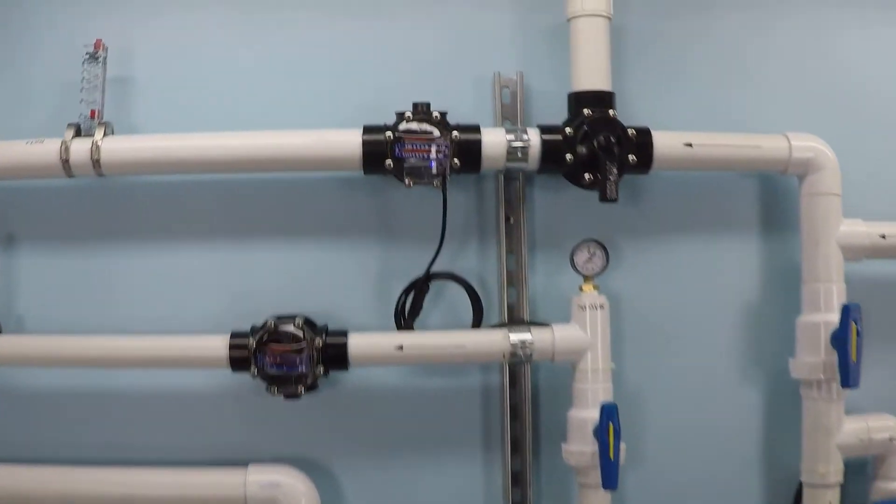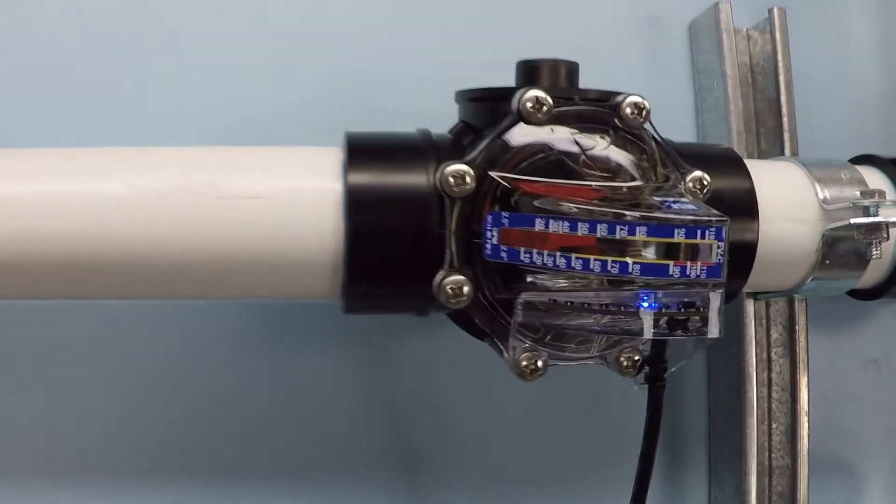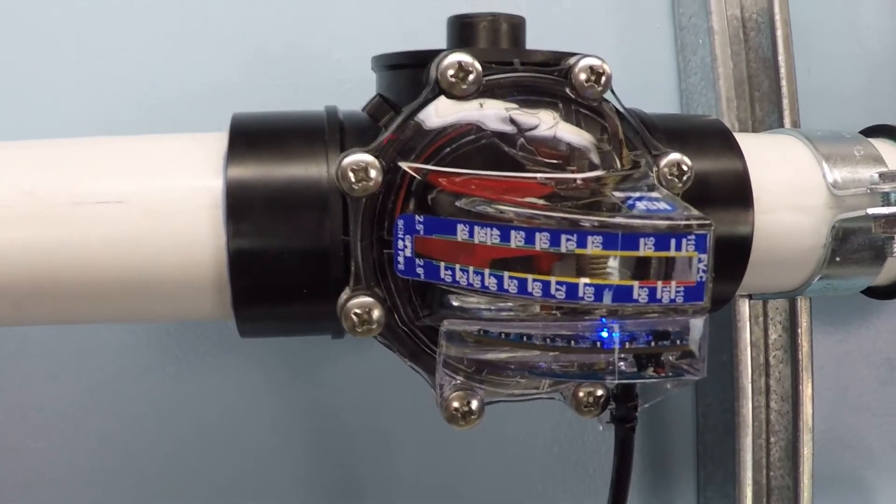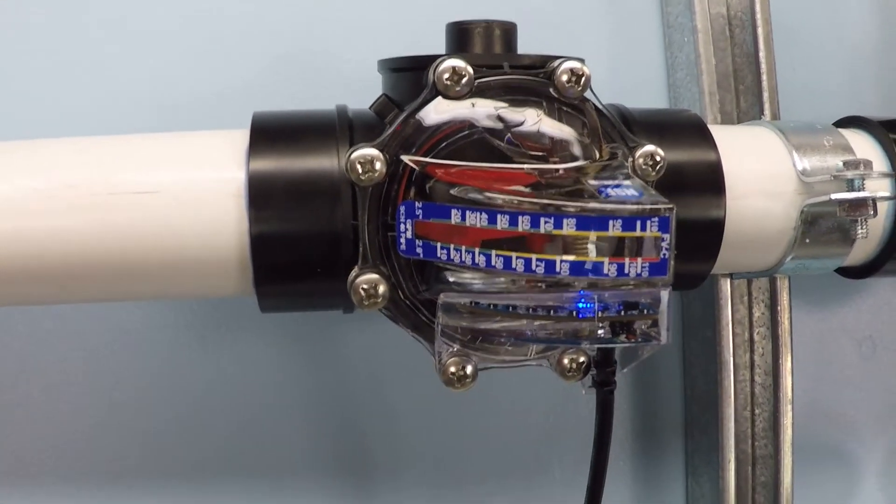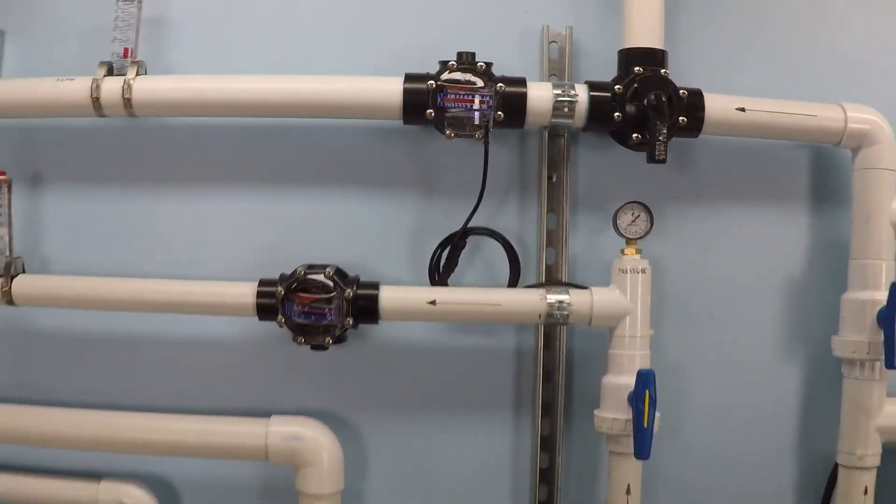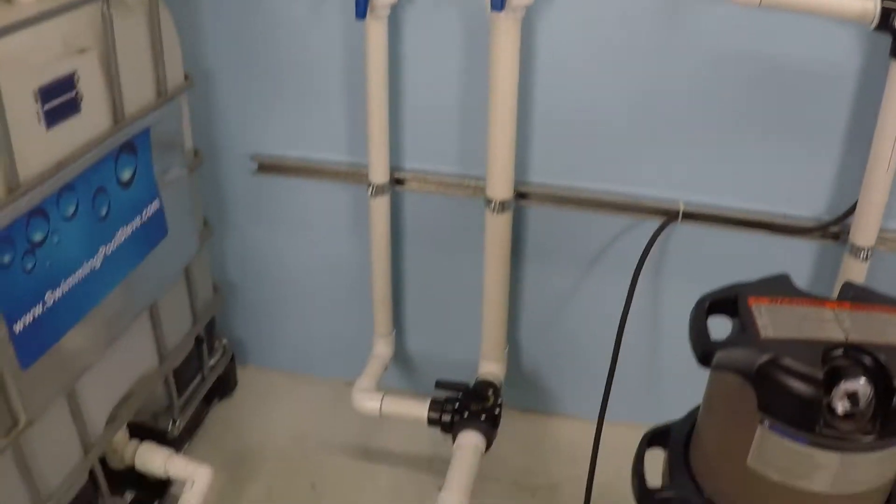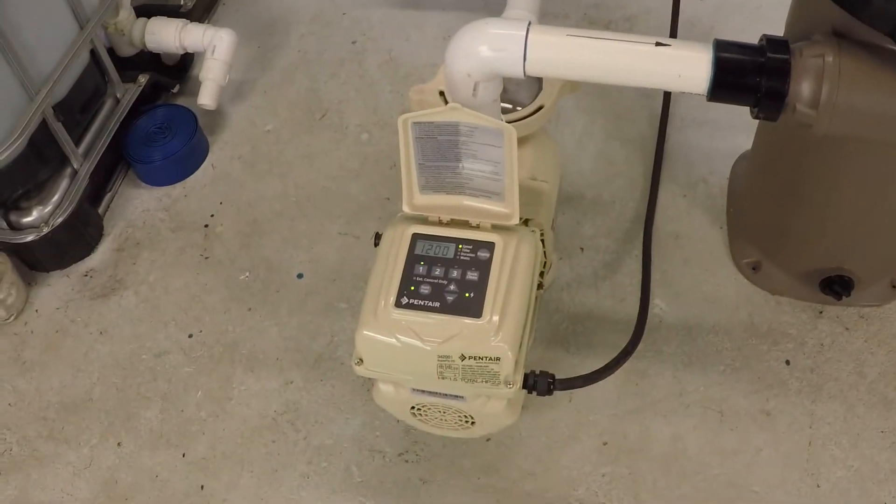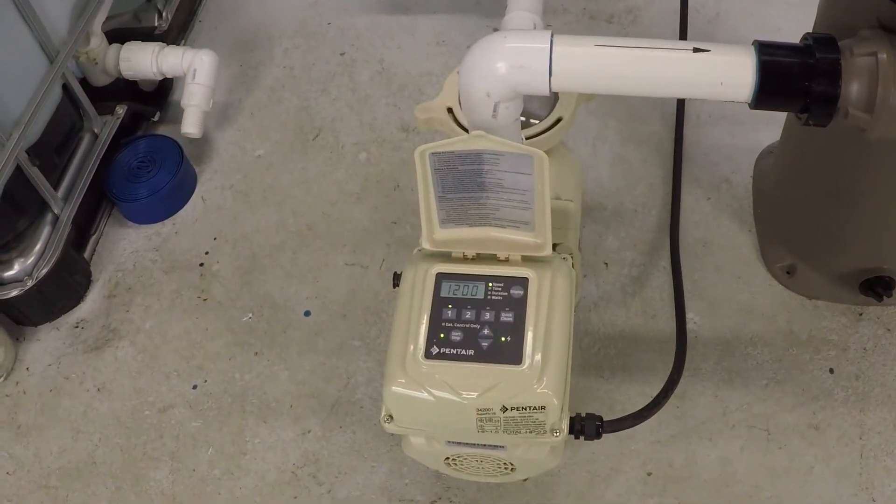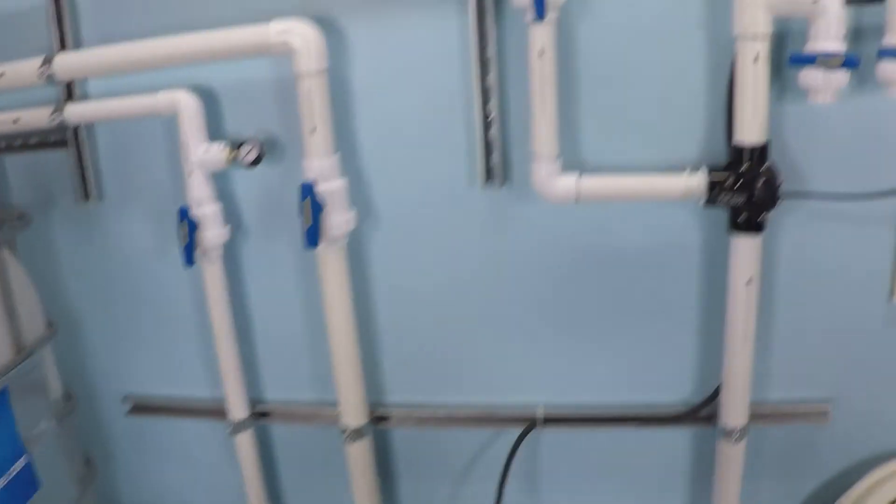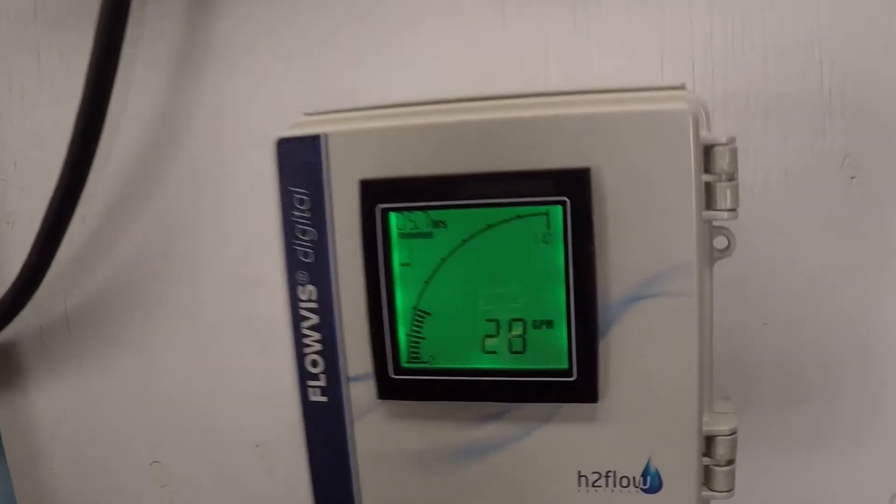A flow meter tells you how much water is traveling through your system at any given time. Without one you really can't even begin the process of calculating anything about flow rates or filtration or turnover or anything about your pool.